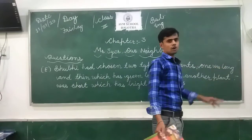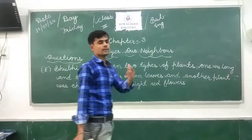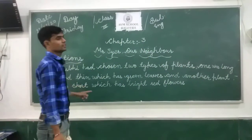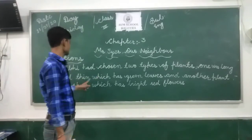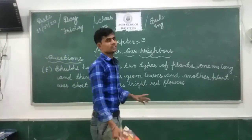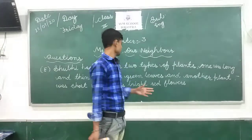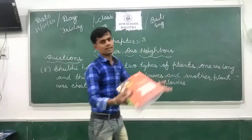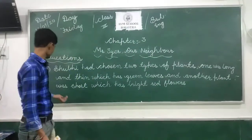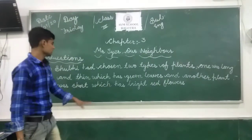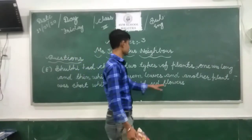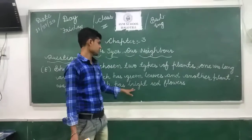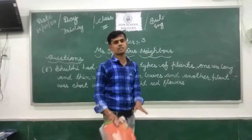One plant was long and thin — लंबा और पतला था — which had green leaves, जिसके green color के पत्ते थे। And the other plant that Soobie selected was short — छोटा था — which had bright red flowers, उसके bright red color के flowers थे।